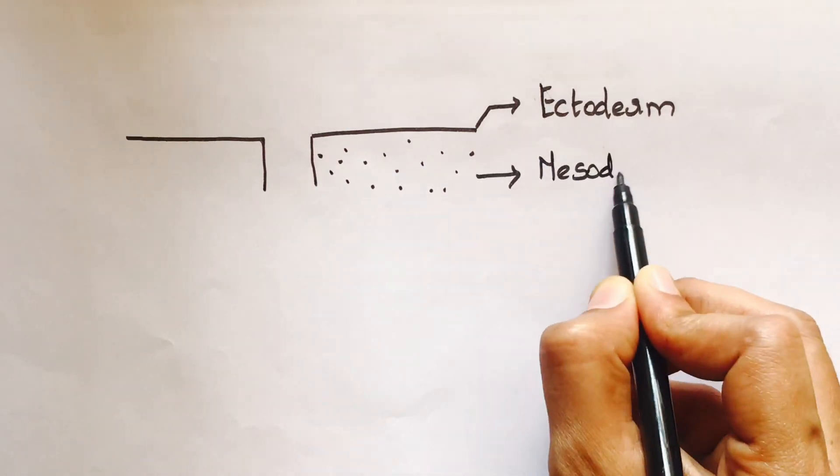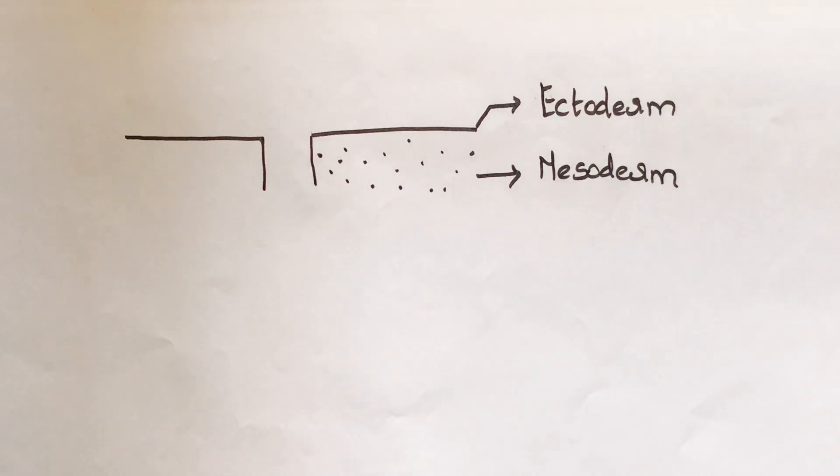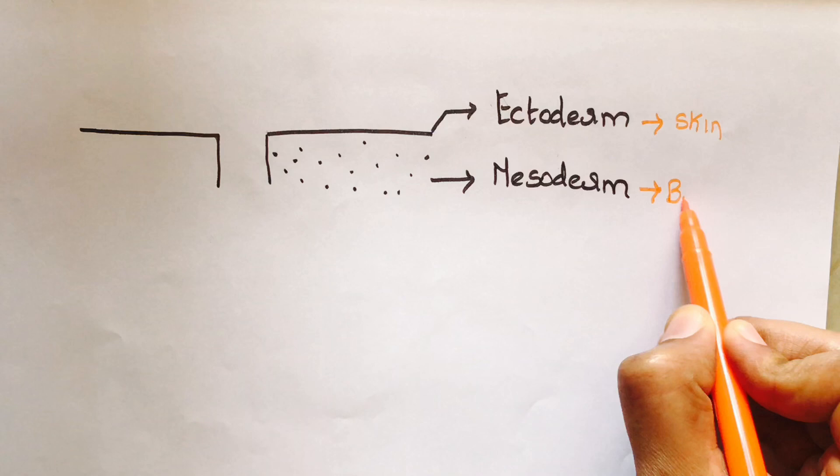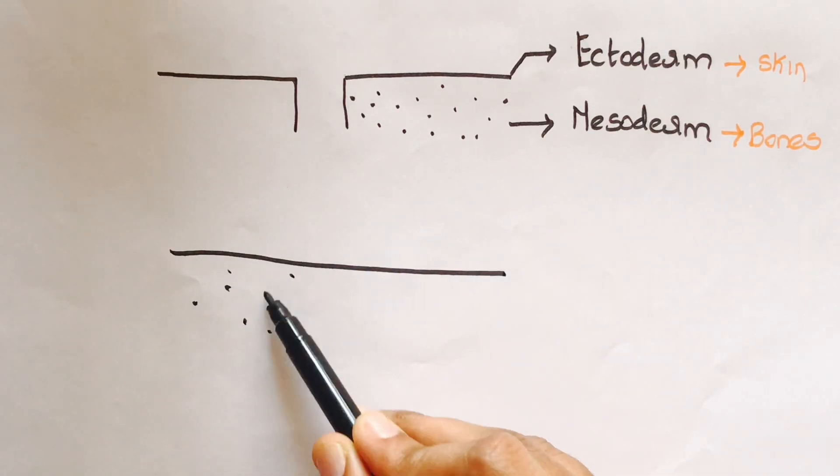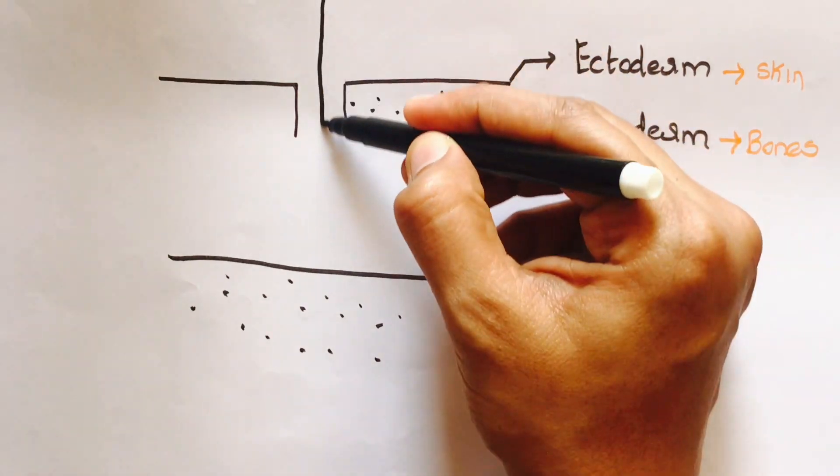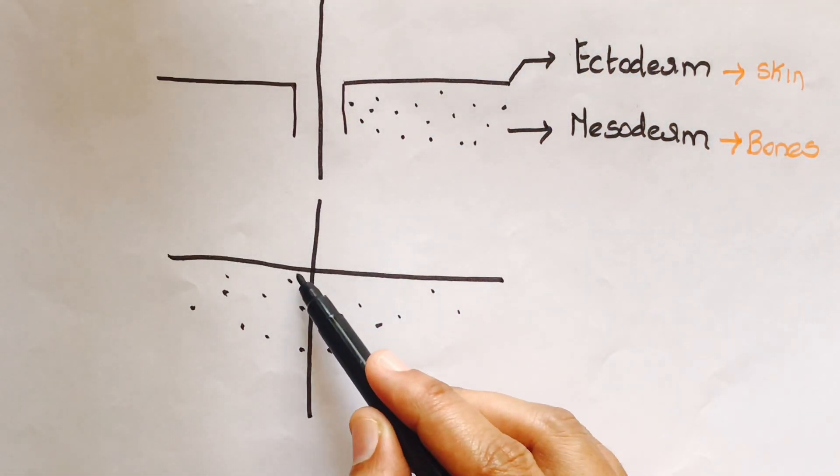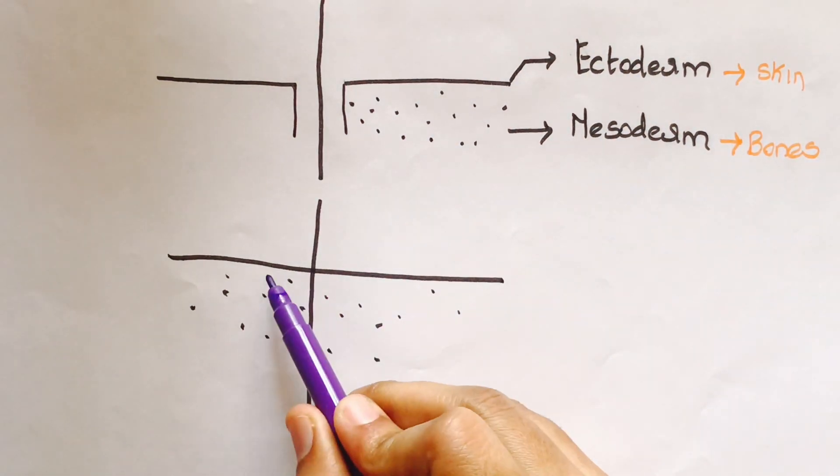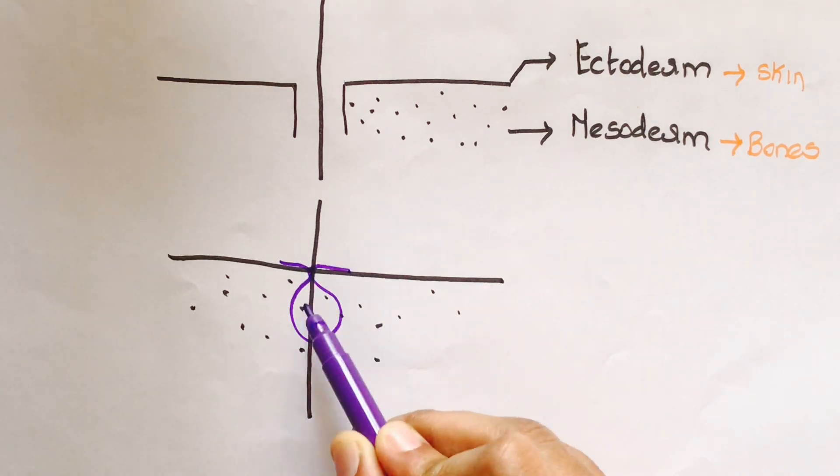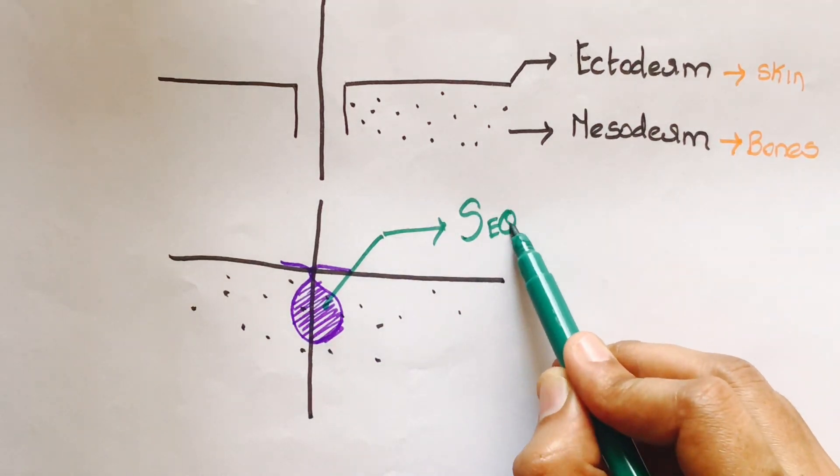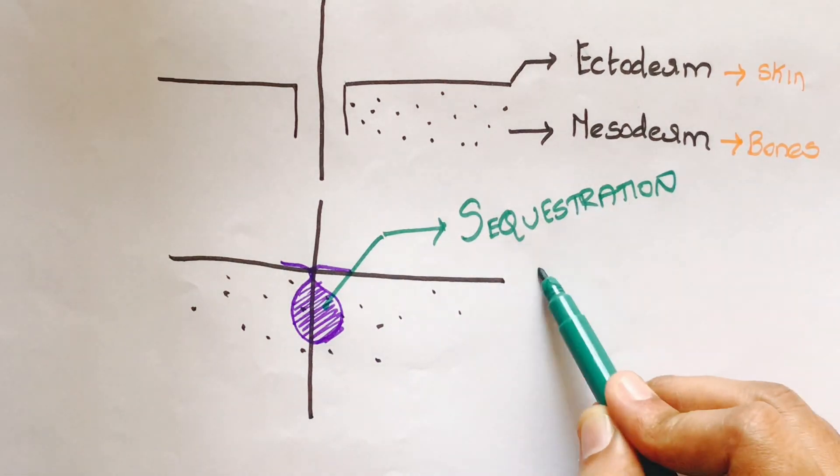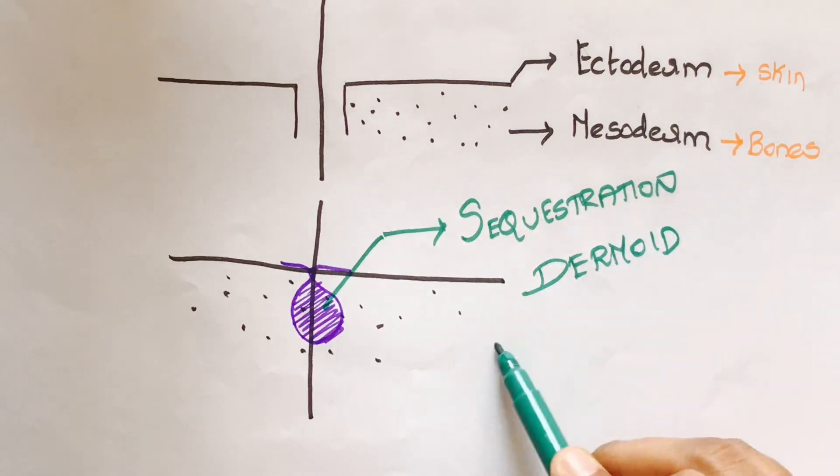Let's consider the germ layers: ectoderm and mesoderm. The ectoderm develops into skin, and mesoderm develops structures like bones. The cyst is formed by inclusion of epithelium buried at the line of embryonic fusion, and this type is called sequestration dermoid.